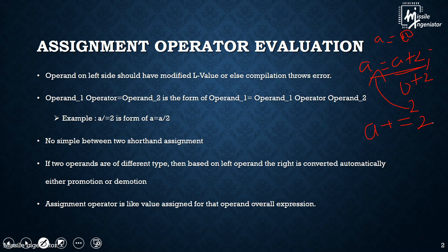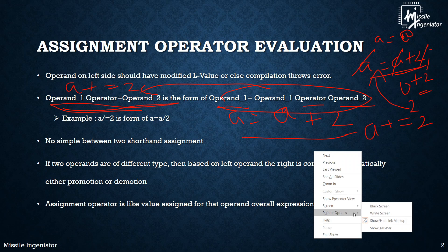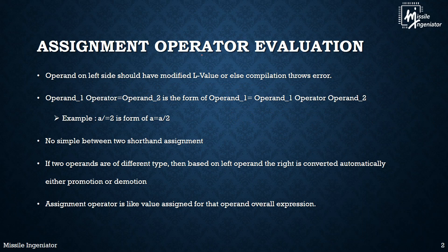In the format A += 2, operand1 is A, the operator is plus, and operand2 is 2. So writing A += 2 is equivalent to writing A = A + 2. This compact format is the assignment operator shorthand. You can also relate it with a division operator example — instead of writing in the long form, we can write it in the short form. This is the assignment operator.